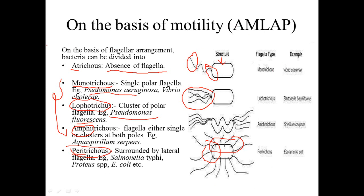There is a formula to remember all kinds of flagella arrangement — that is AMLAP. A stands for Atricus, meaning no flagella. M stands for Monotricus, meaning one flagella at one polar end. L stands for Lophotricus, meaning many flagella at one polar end. A stands for Amphitricus, meaning flagella at both polar ends. P stands for Peritricus, meaning flagella distributed over the whole surface.